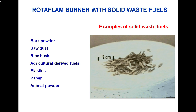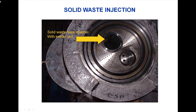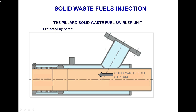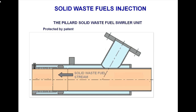Examples of solid waste fuels with maximum size 2 centimeters: bark powder, sawdust, rice husk, agriculture-derived fuels, plastic wrapper, and animal powder. Solid waste fuel channel with spill unit — solid waste fuel injection. The filler unit manages the solid fuel stream as part of primary air, with a solid waste spill unit.